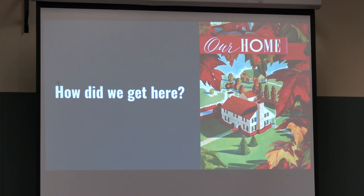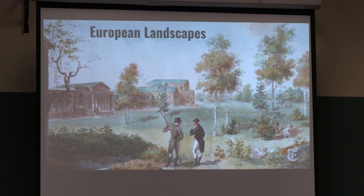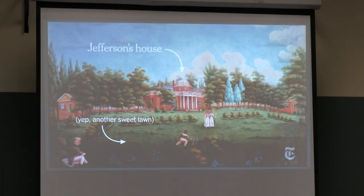So how did we get here? Back in the 16th century all the way up to the 20th century, European landscapes on the Grand Estates looked like this—lots of lawn, trees around the edges—but it was maintained by the staff. Homeowners didn't do anything except pay for it or own it. Here in the United States, the same thing was happening in the 17th, 18th, and 19th centuries. This is George Washington's home and Jefferson's home—lots of lawn maintained in both cases by slaves.